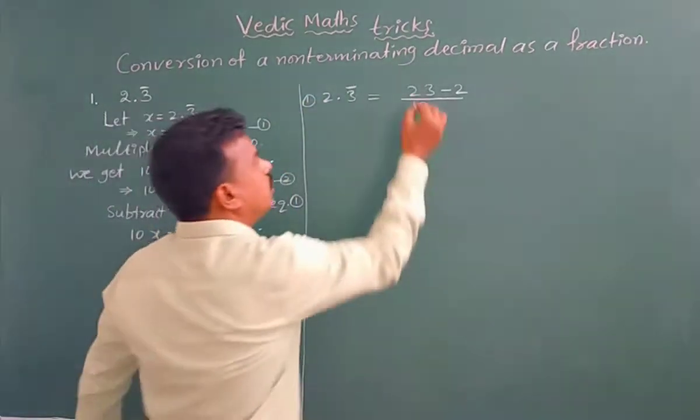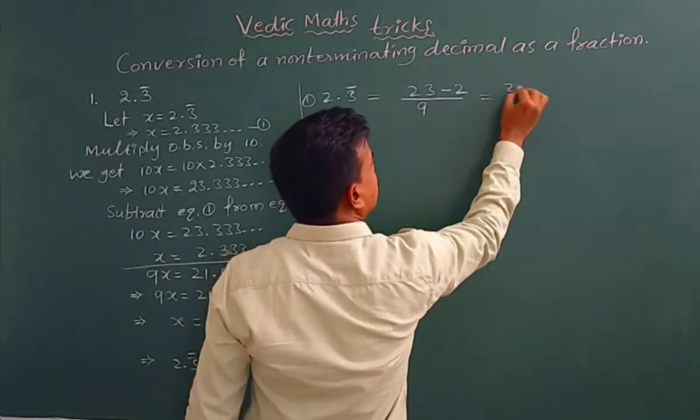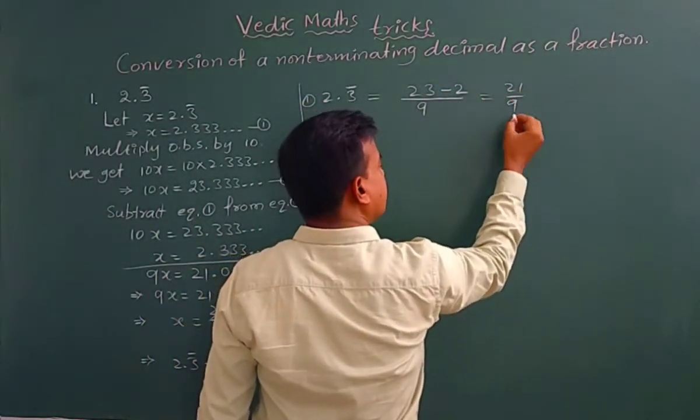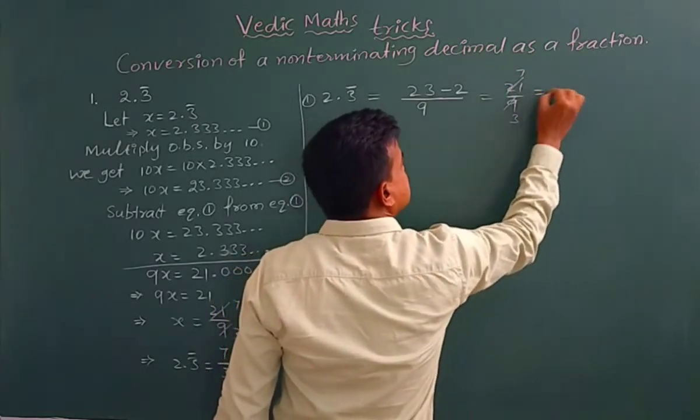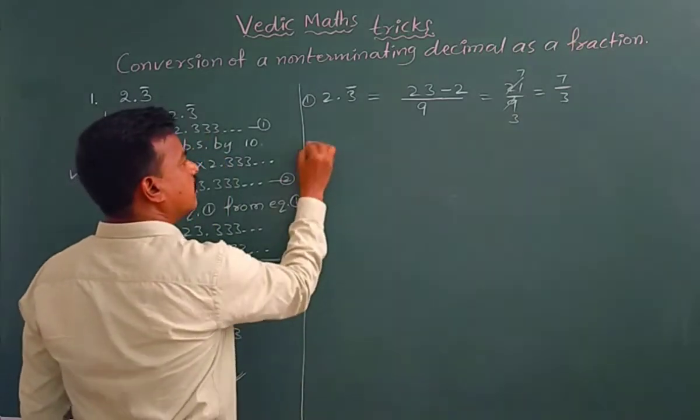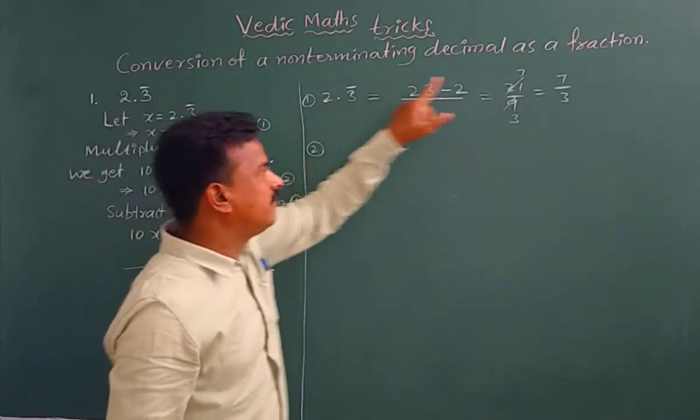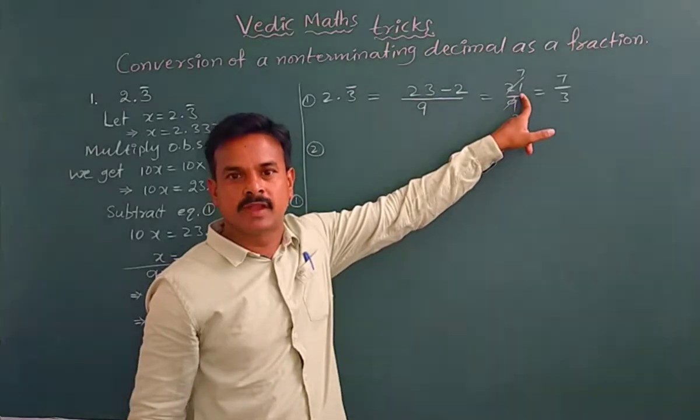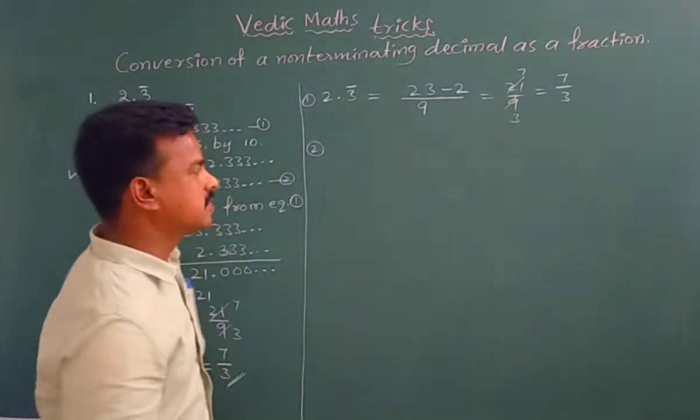At the same time, now you see how many digits are there without bar. There is one digit, that is two. That two you subtract from numerator. That means 23 minus 2 by 9. So 23 minus 2, how much? 21 by 9. You simplify, 3 into 7 is equal to 7 by 3. That's it. Very simple. Directly we can write this step after practicing some problems.